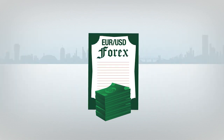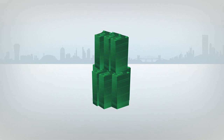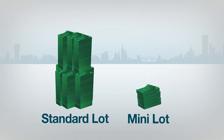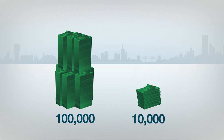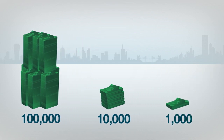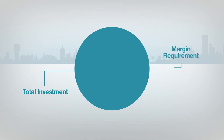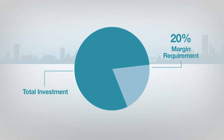Forex margin requirements vary depending on the currency pairs and the size of a trade. Currency pairs typically trade in specific quantities known as lots. The most common lot sizes are standard and mini. Standard lots represent 100,000 units and mini lots represent 10,000 units. Depending on your brokerage firm, you may also be able to trade Forex in 1,000 unit increments, also known as micro lots. Margin requirements can be as small as 2% or as large as 20%, but the margin requirement for most currency pairs averages around 3 to 5%.